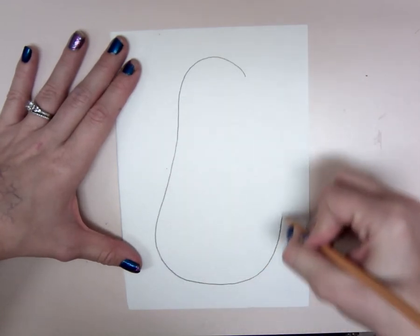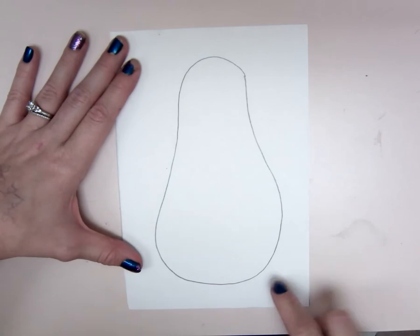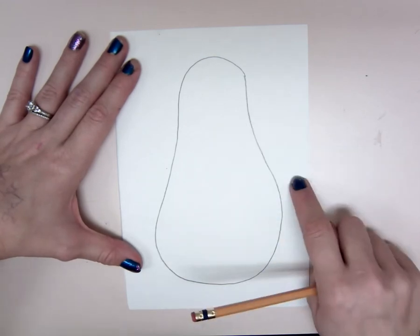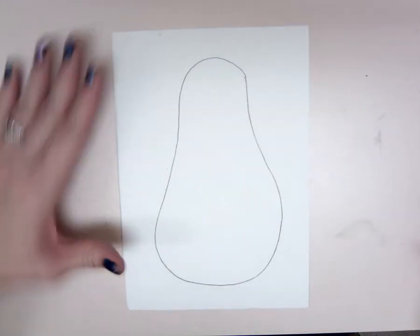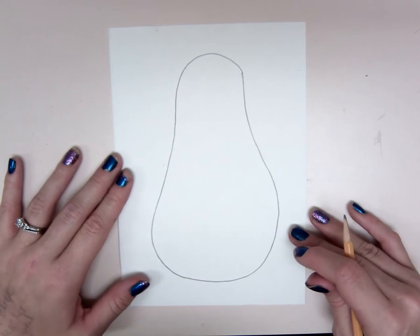You want to make it big but leave room for feet and wings. So you want to make it pretty big, it almost looks like a smushed bowling pin.